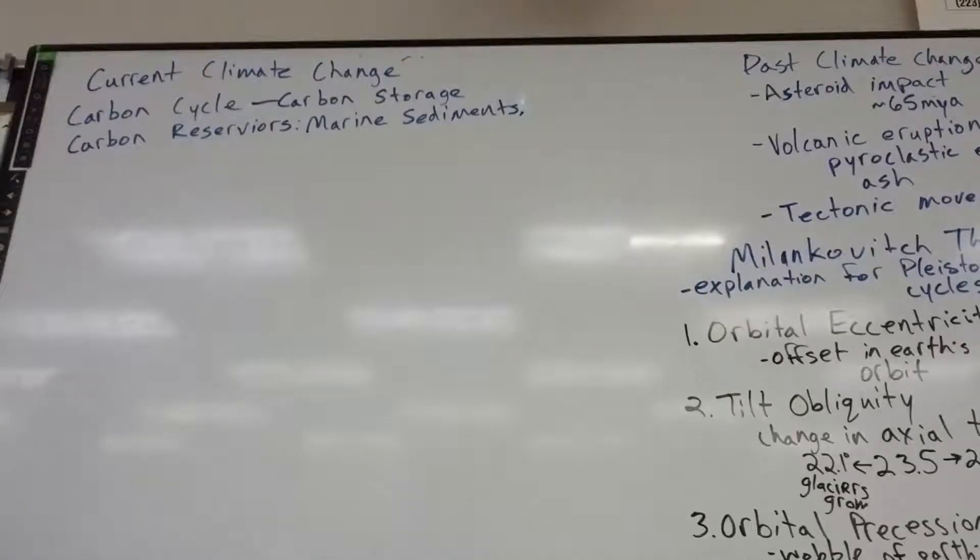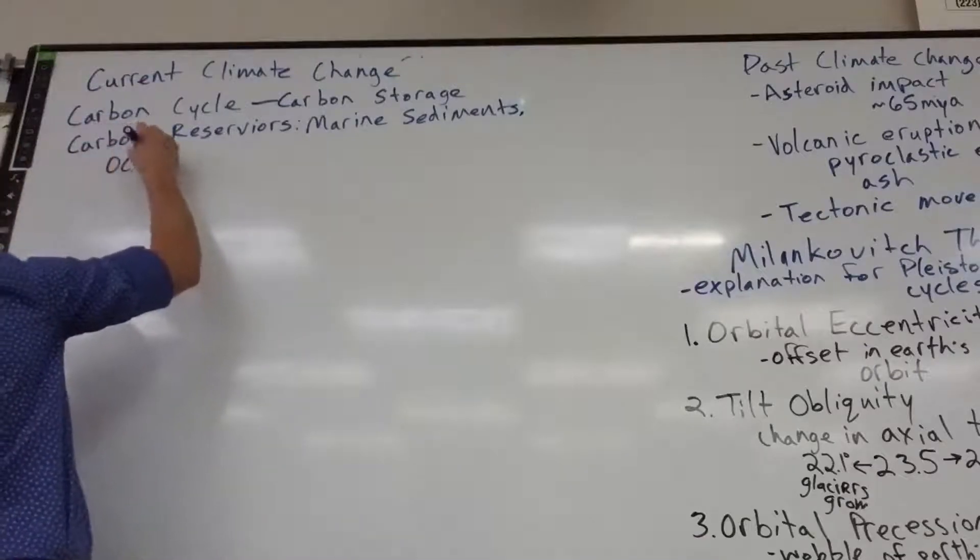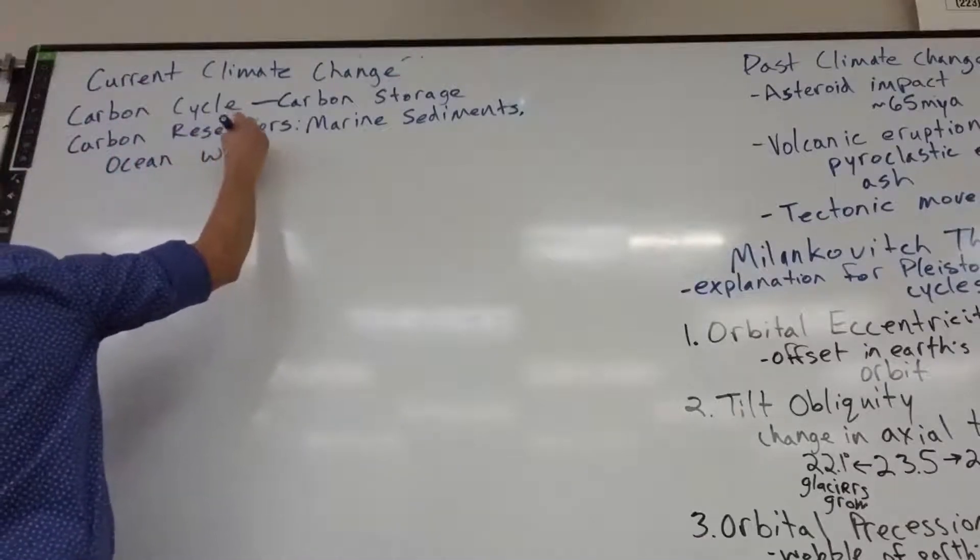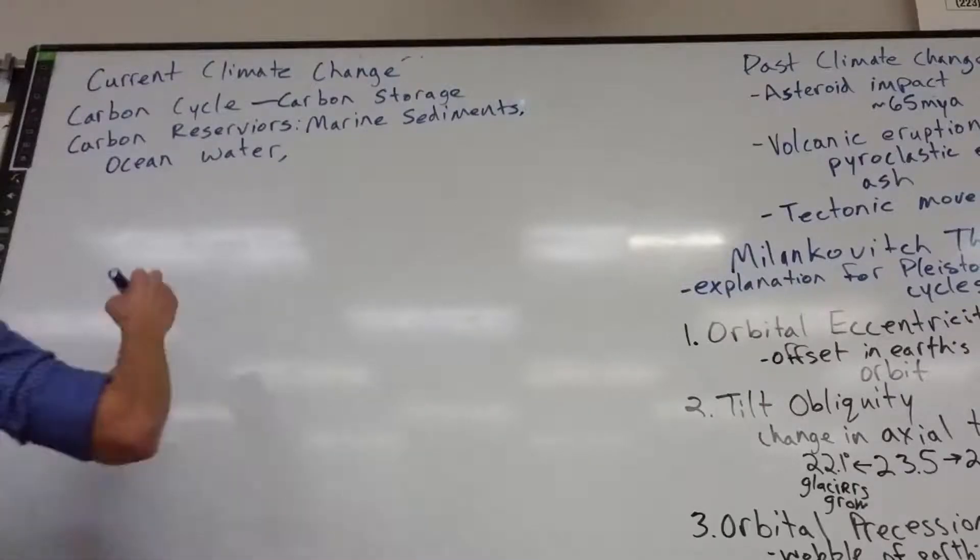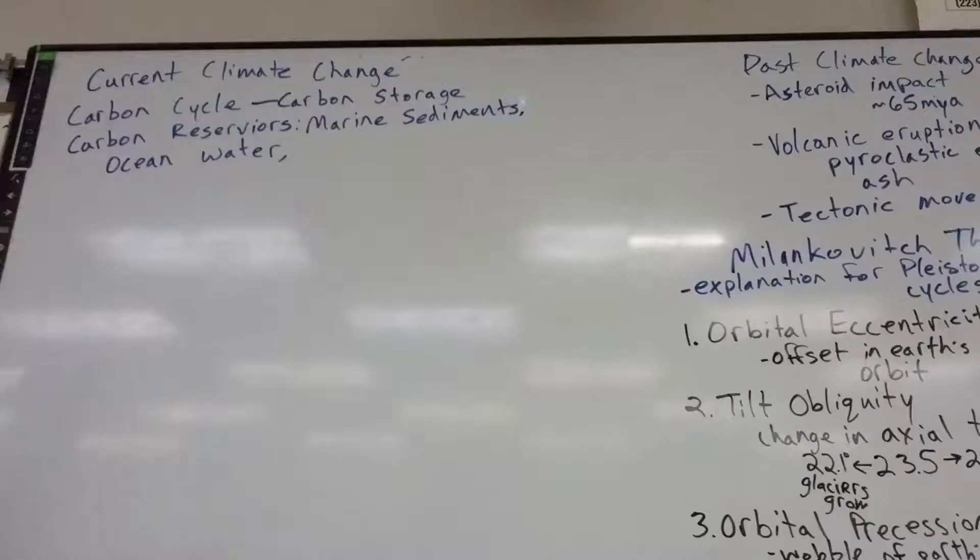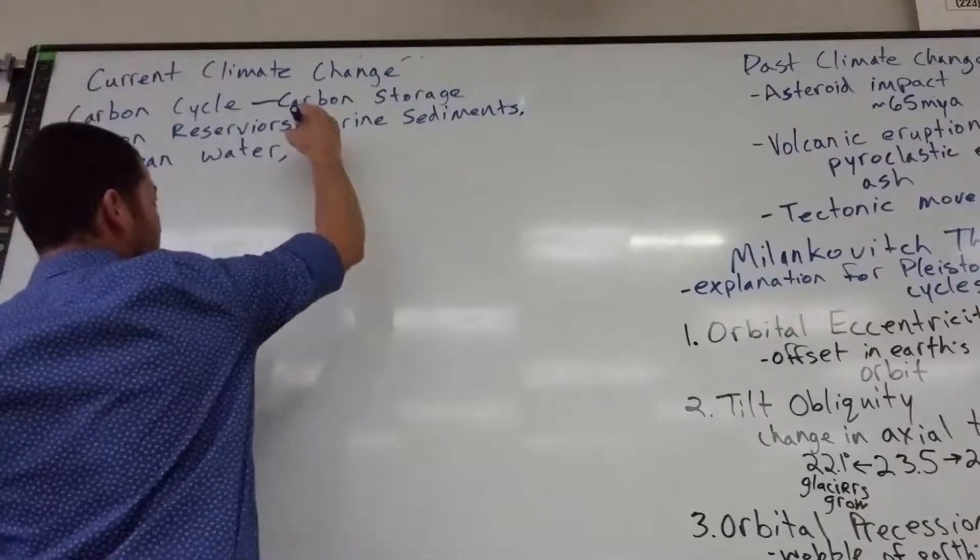Next biggest carbon reservoir is ocean water. So actual ocean water, salt water, has lots of dissolved carbon in it. You knew ocean water had salt. You know it had water. It's got a bunch of other minerals in it too. Carbon is one of those.